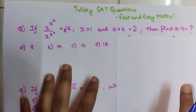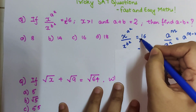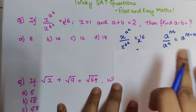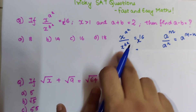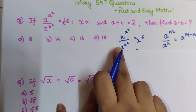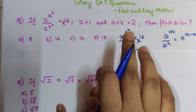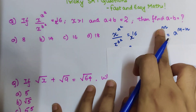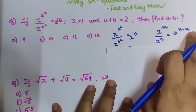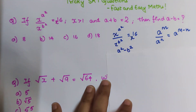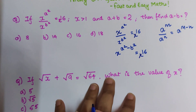Coming back to the question: we have x raised to a² upon x raised to b² equals x raised to 16. Here we use a law of indices — when the bases are the same and the indices are different, you can write it as subtraction of the indices. The law states: a raised to m upon a raised to n equals a raised to m minus n. So we can write this as x raised to a² minus b² equals x raised to 16.